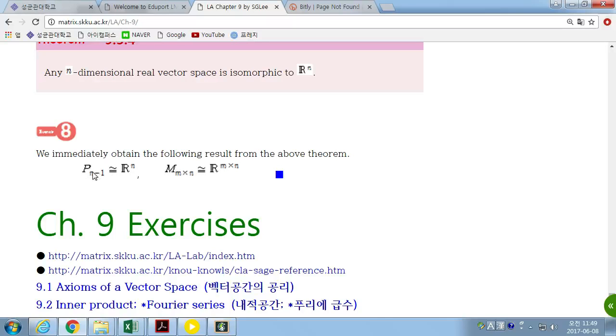So, for any vector space over R and C, you don't have to think differently. You can think with, since we know the nature and properties of R^n and C^n.